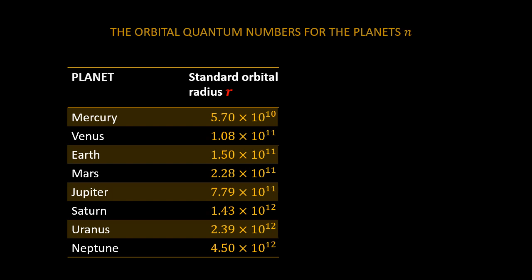To get the quantum number n, we use the formula r equal to n r0 we postulated in the last video, such that n is equal to the orbital radius of a planet r divided by the fundamental radius r0. The first radius is 5.7 exponential 10 meters, so we let r0 to be equal to 5.1 exponential 10, for reasons that will become clear shortly.